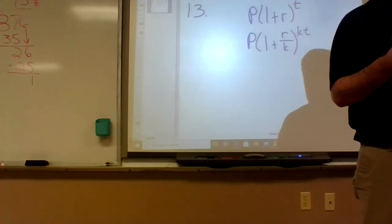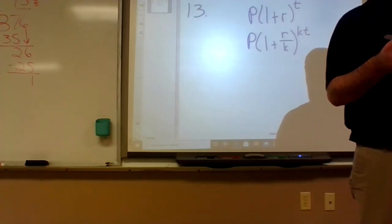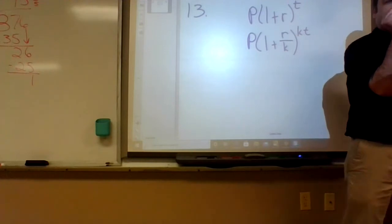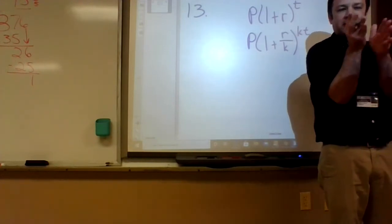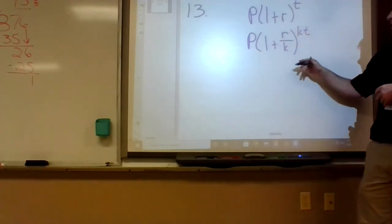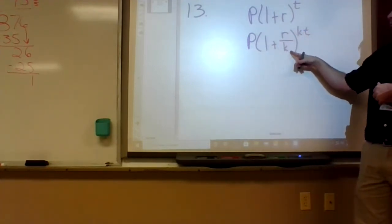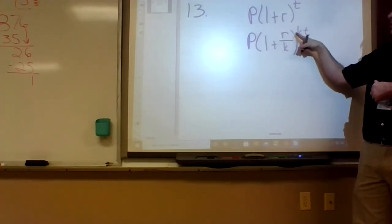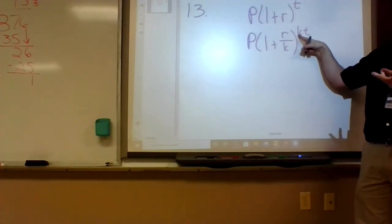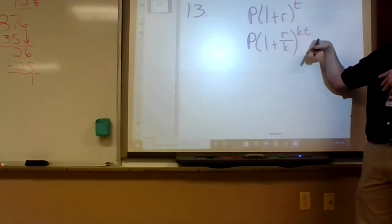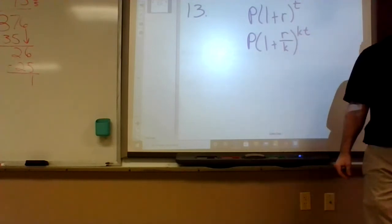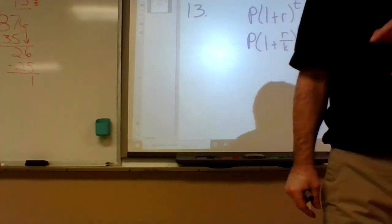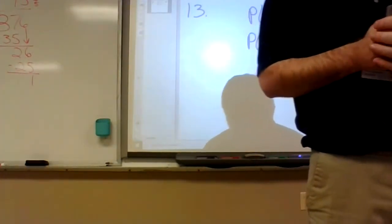With compound interest, if you get paid four times a year, you only get one-fourth of your interest rate each payment. But it helps you earn just a little more money because you're getting interest on interest a little bit earlier. You divide the interest rate by k and multiply the exponent by k.